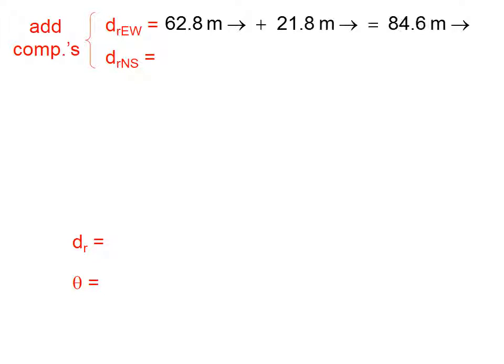Next, we need to add the components. We're going to take, in this case, our two east-west components and our two north-south components, and we're going to add them. Notice that 62.8 meters east plus another 21.8 meters east is going to give us 84.6 meters east. This vector goes to the north, this component vector goes to the north, so we simply add them to find the resultant north-south component.